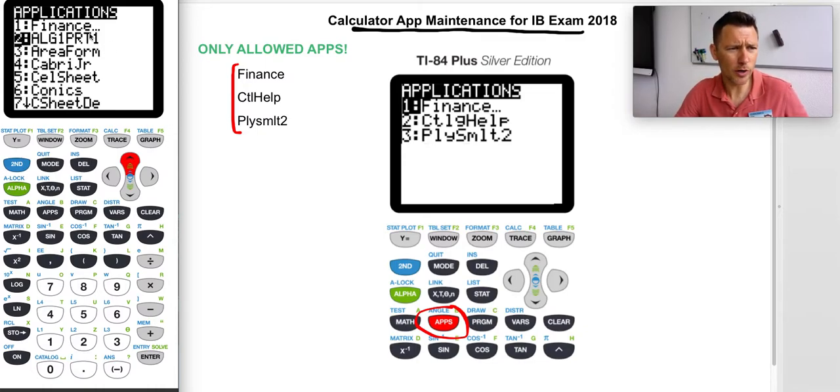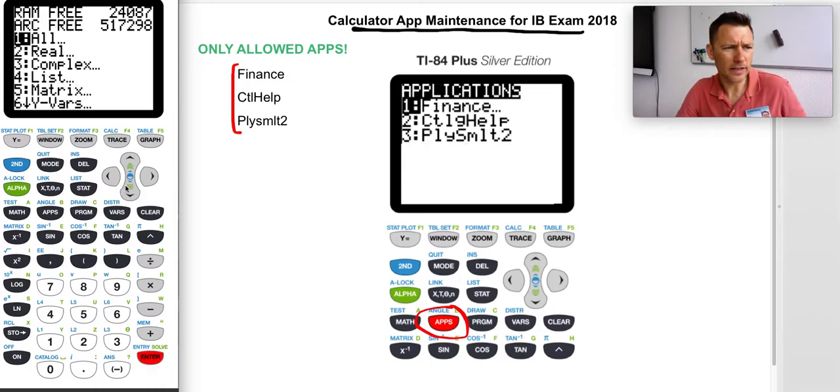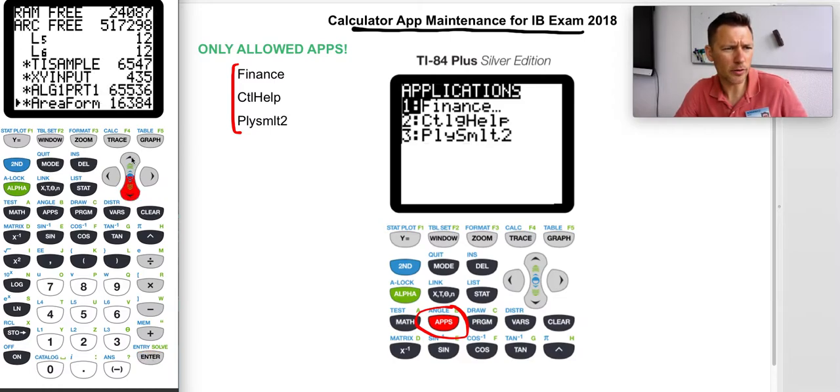I'll show you how to delete LG one parts one. You go to second memory and memory management slash delete. Go into all and then go down until you find LG one part, the thing that you want to delete.